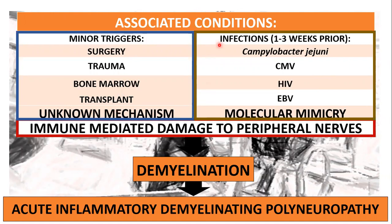However, as for infections that can happen one to three weeks prior to GBS, these include gastrointestinal or respiratory pathogens like Campylobacter jejuni, CMV, HIV, and EBV. All of them can have a molecular mimicry mechanism, by which the ganglioside antigen present in the peripheral nerves and in the pathogen surface coat triggers the immune system to attack the peripheral nerves as well, because they resemble each other very closely.